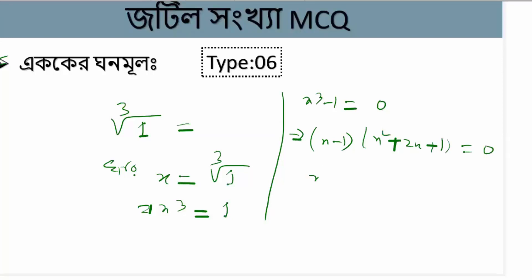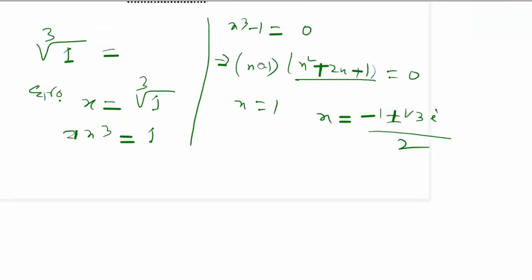So x equal to one, or using the quadratic formula, x equals minus one plus or minus root of three divided by two. That is the calculation to get the values.